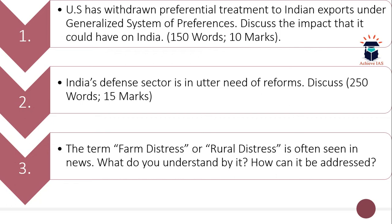The second question is: India's defense sector is in utter need of reforms — discuss. The word limit here is 250 and the maximum marks are 15. The third question is: the term 'farm distress' or 'rural distress' is often seen in news — what do you understand by it and how can it be addressed? The word limit for this question is 250 and the maximum marks are 15.